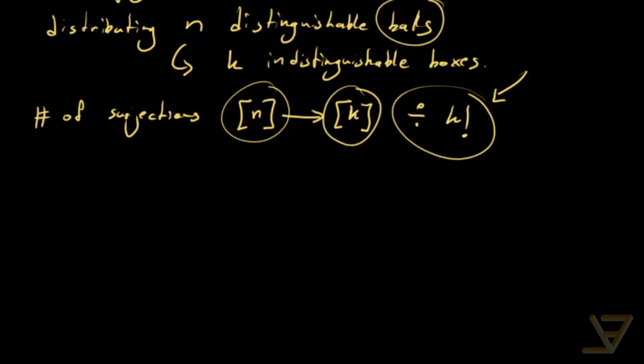And we know that the number of surjections by an argument using the principle of inclusion and exclusion is equal to the sum from i equals 0 through K of negative 1 to the i, K choose i, K minus i to the N. That's the number of surjections from N to K. And we divide by K factorial, and that gives us N split K.